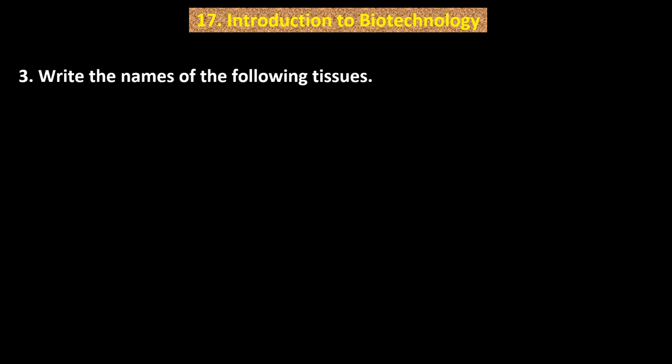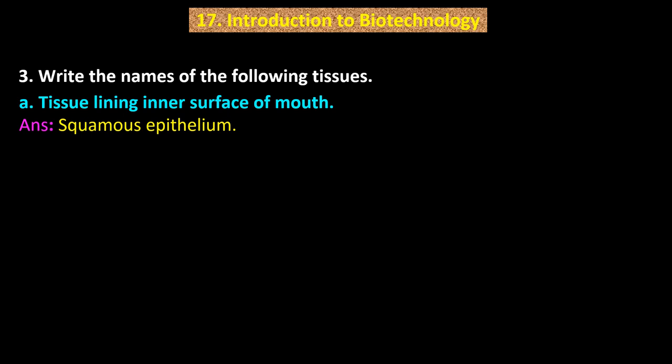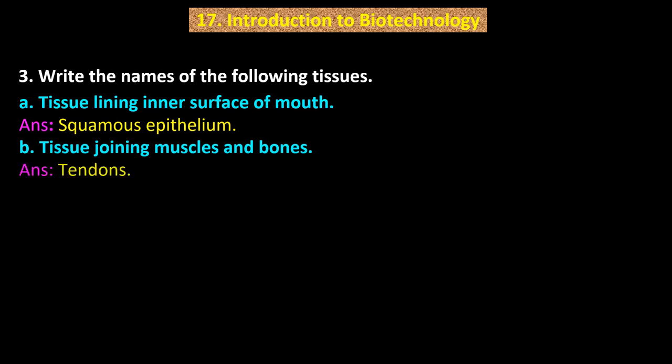Question number 3. Write the names of the following tissues. Point A: Tissue lining inner surface of mouth. Answer: Squamous epithelium. B: Tissue joining muscles and bones. Answer: Tendons.